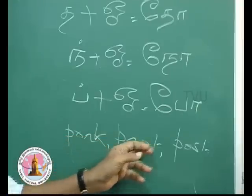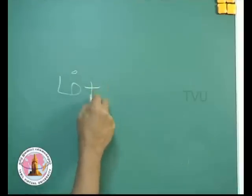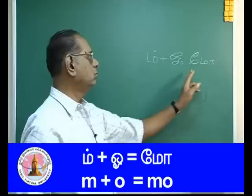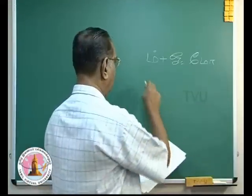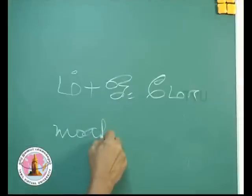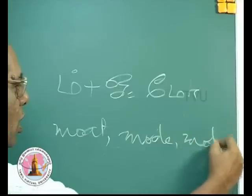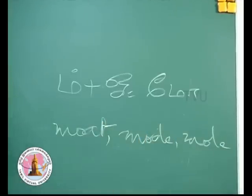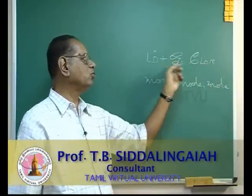Words like 'pork' and 'post' — this is 'Po'. Then M plus O gives 'Mo', as you have in 'moat' and 'mole'. This is 'Mo' — M plus O gives 'Mo'.